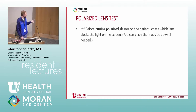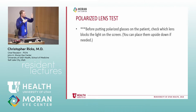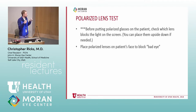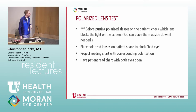Polarized lens test: before placing the polarized lens on the patient, check which lens is blocking the light, since one is polarized vertically and one horizontally. Most screens — including Snellen chart computers — send polarized light, so you need to know which is which. Place the polarized lens over the patient's face to block the bad eye and project the chart. If they can read the chart with both eyes open while you're blocking the good eye, you know they can see through the bad eye.